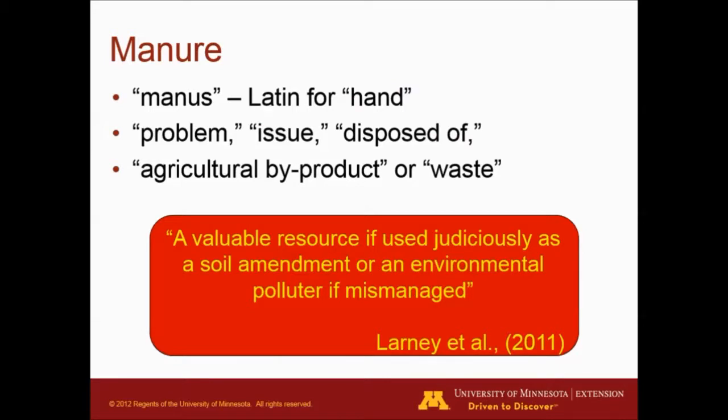Some of the basics of manure: manure comes from the term 'manus,' which is Latin for hand. That's the way that manure was applied many years ago before we had synthetic or commercial fertilizers — it was applied by hand to crops and was the main source of nutrients for crop production. Manure can be perceived as a problem or as a waste instead of an agricultural byproduct, depending on how it is used. We just need to make sure that we manage that resource properly so that we can use it for agricultural production and not as a waste.